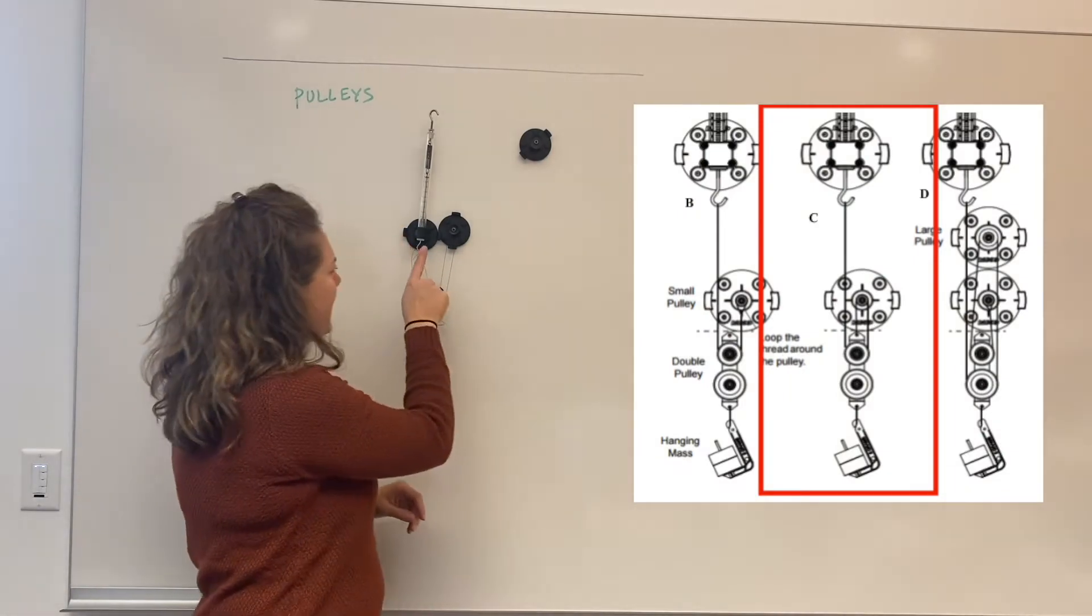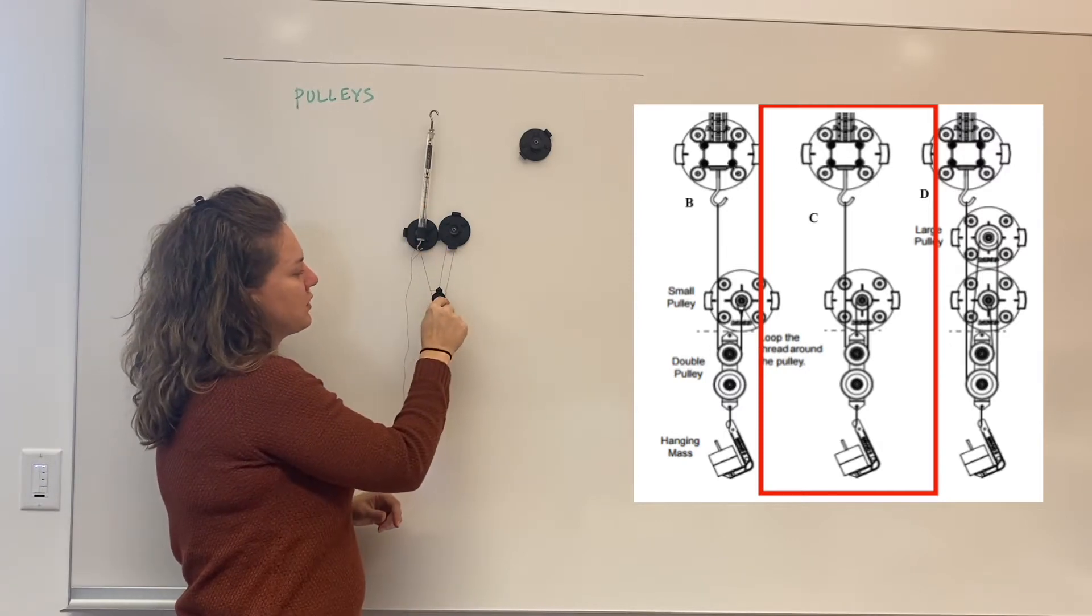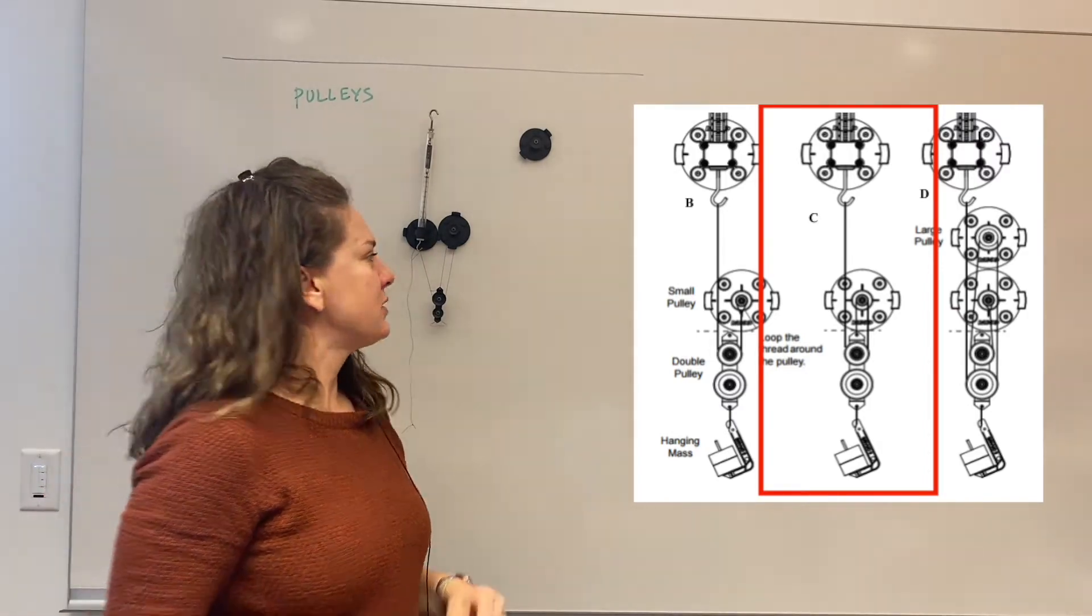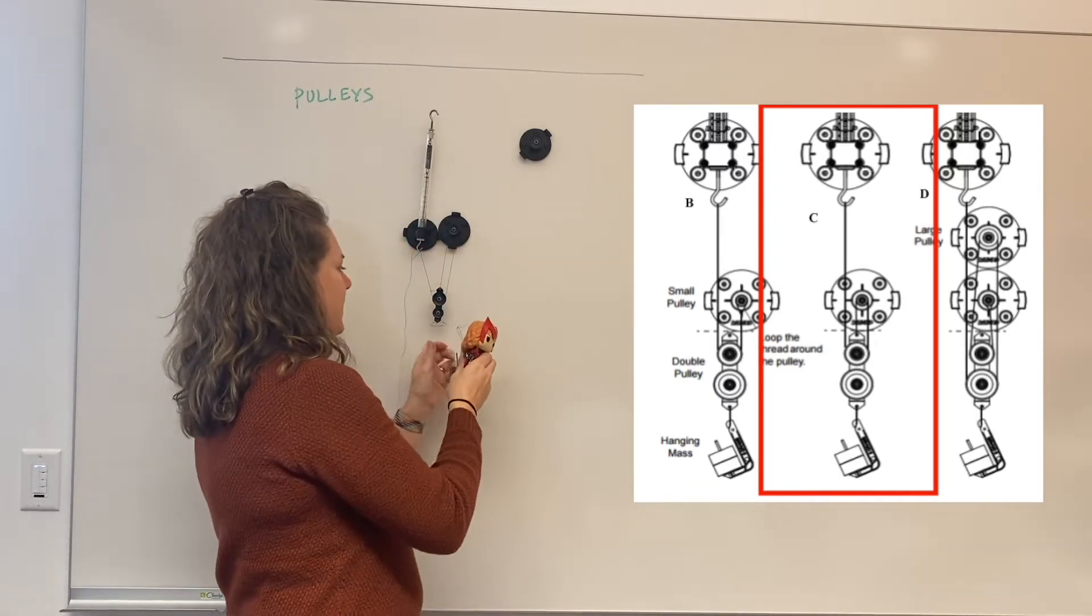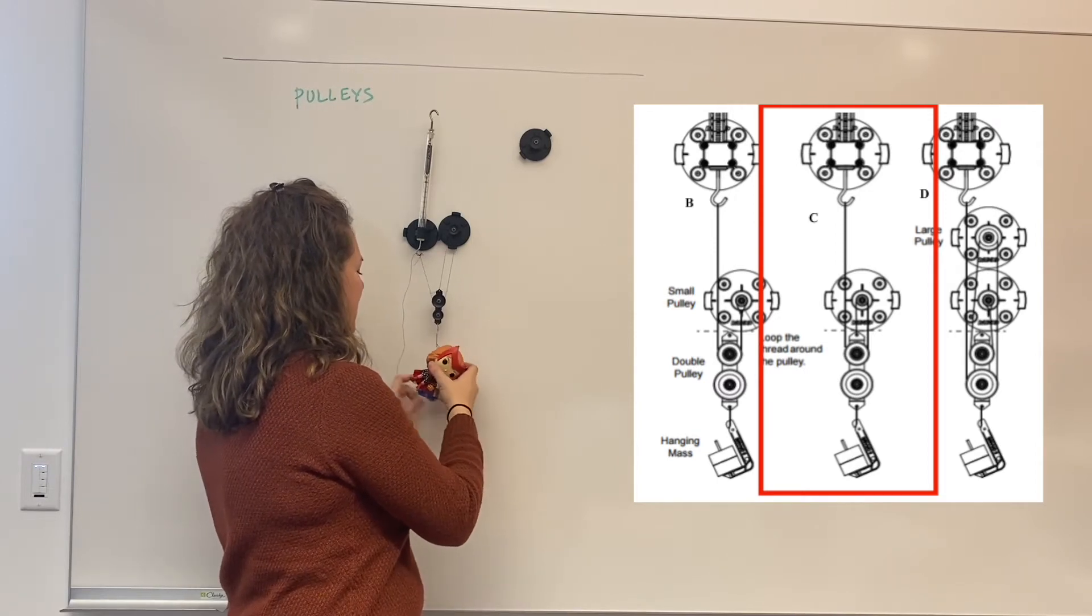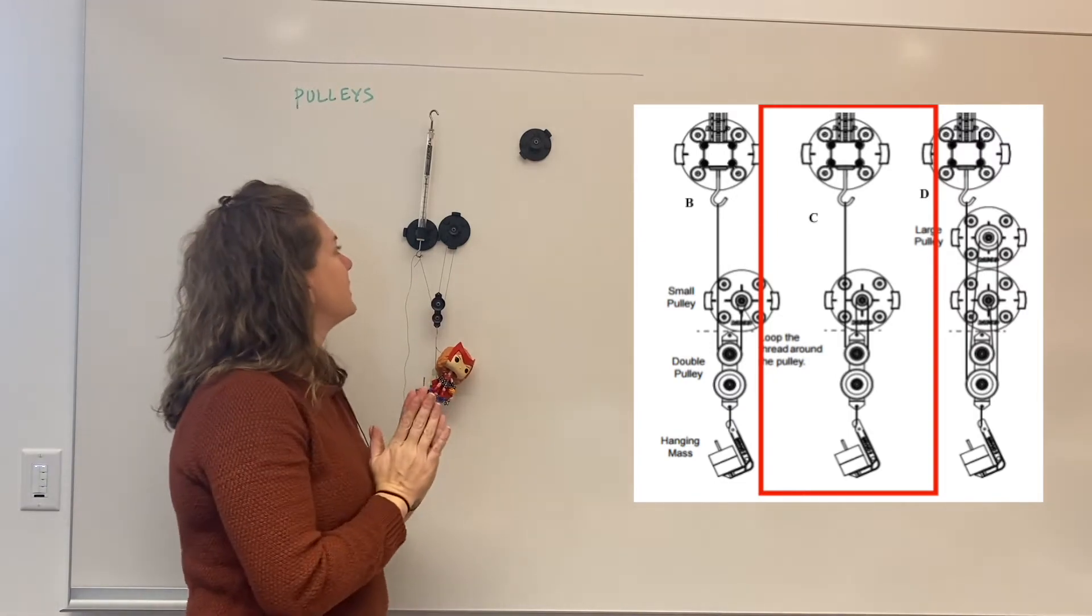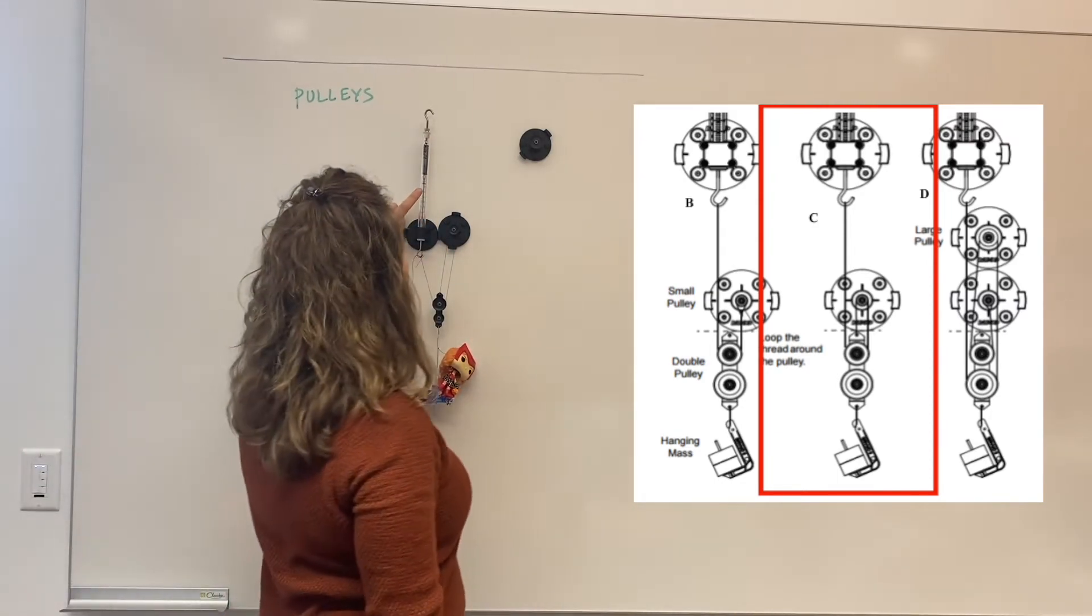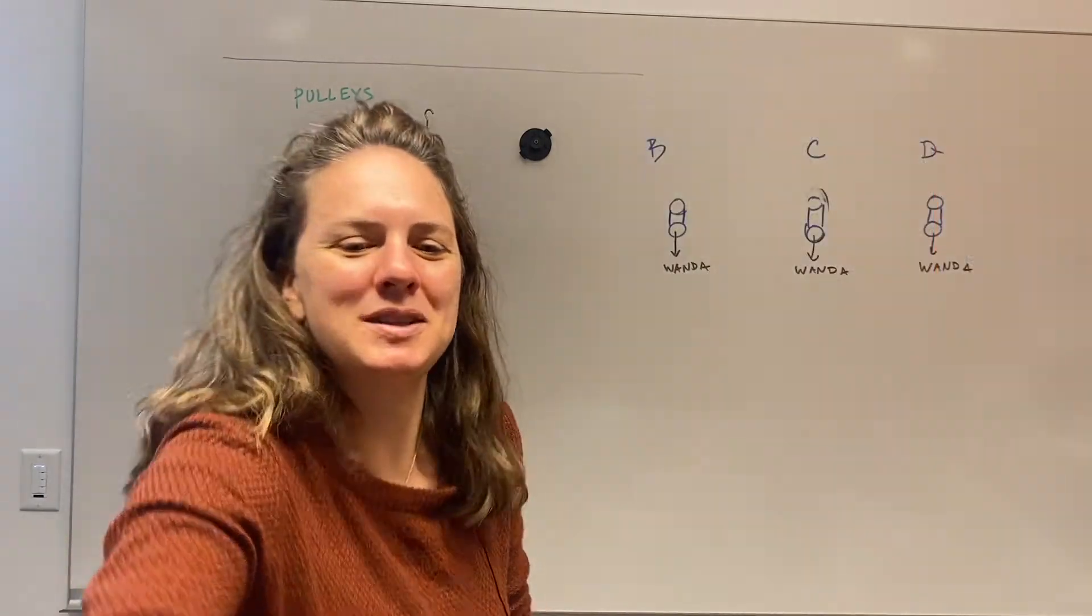I've got this all rigged up. I have the same string coming from my spring scale through this upper pulley over this pulley and then connecting it back to there. So think about what the free body diagram of that would look like. Try drawing that on your handout. And then let's see what happens when I put Wanda in her rig on here. If we read the spring scale on this one, you will see that it is about 0.6, maybe 0.75.